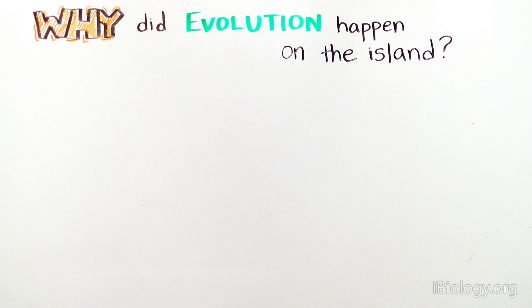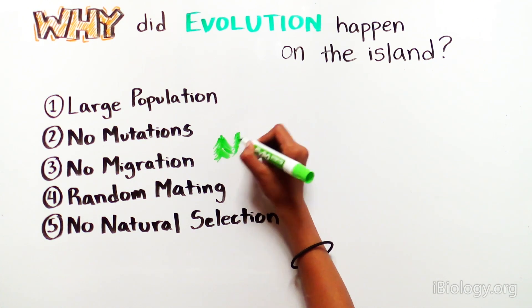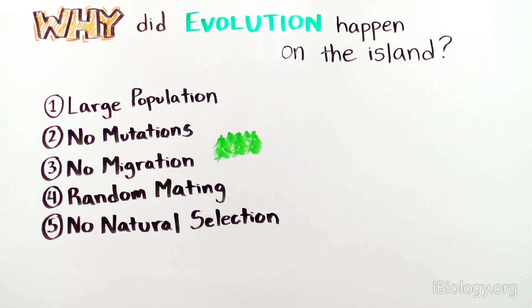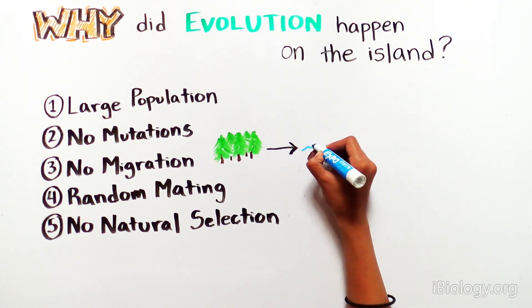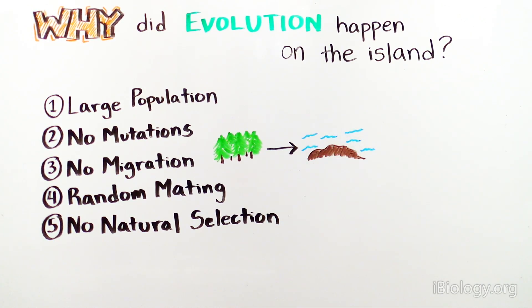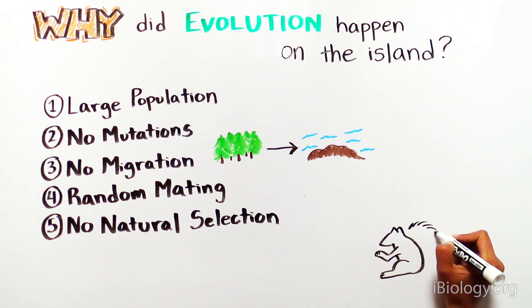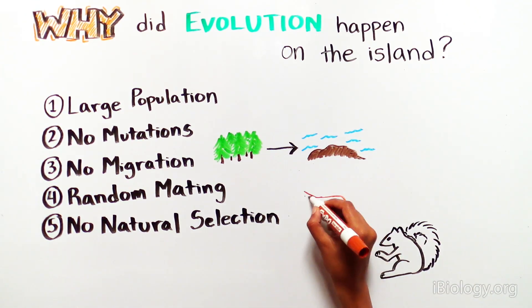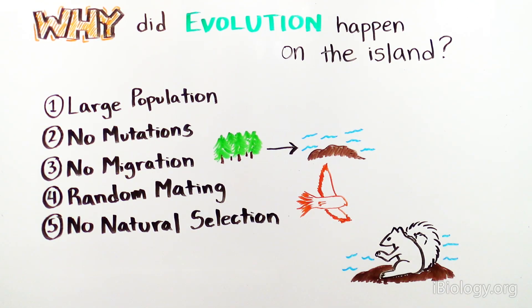What factors caused this population to undergo evolution? Think about the five criteria for Hardy-Weinberg equilibrium. Criteria number three — no migration into and out of the population — may have been violated: perhaps the water level went down, so some white squirrels living on the coast could come from shore and start living on the beach. Criteria number five — no natural selection — may also have been violated: maybe the white squirrels stood out more against the sand than the black squirrels, so they were more noticeable to predators and got eaten.